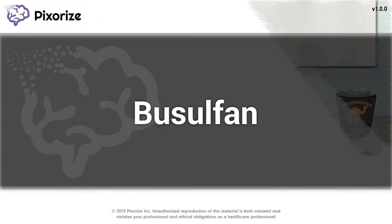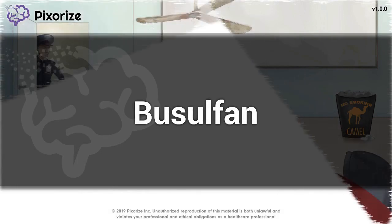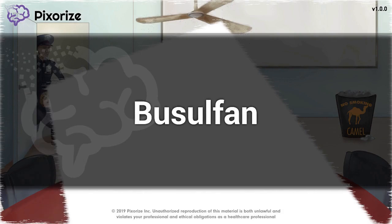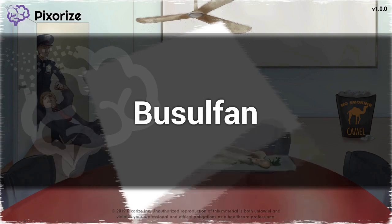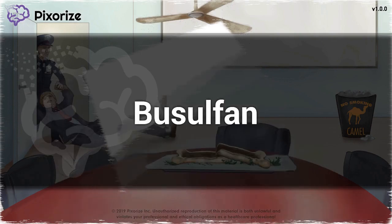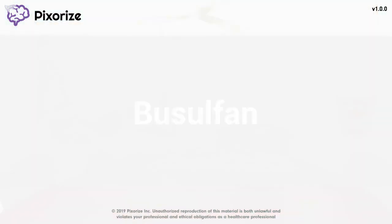Busulfan is an alkylating agent that crosslinks DNA, causing breakage of the strands and affecting the ability of cancer cells to multiply. In this video, we will go over a scene meant to help you remember the important facts about busulfan, its mechanism, and its side effects.